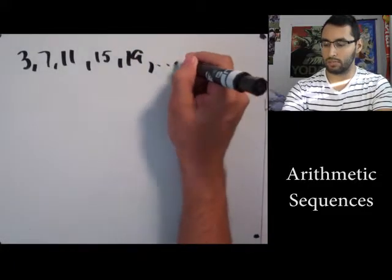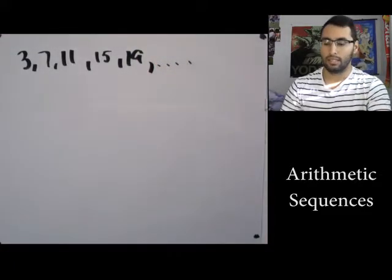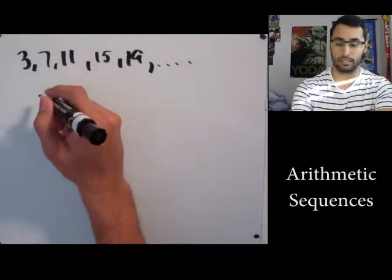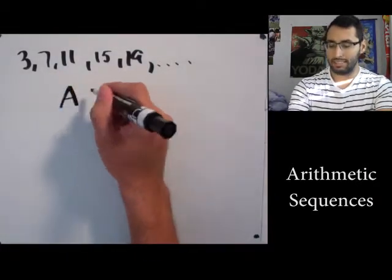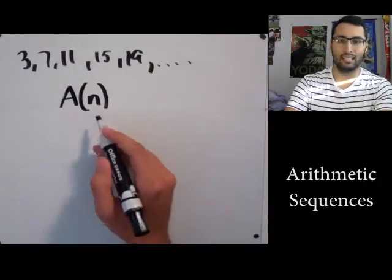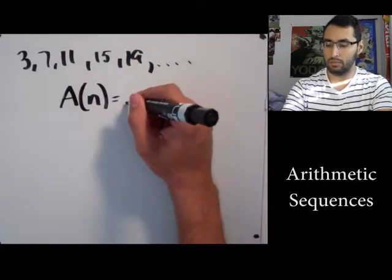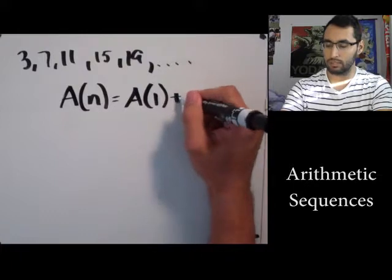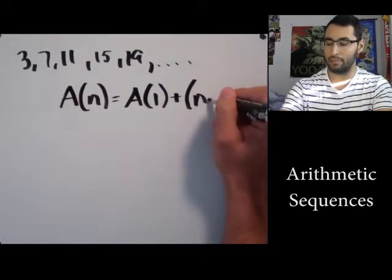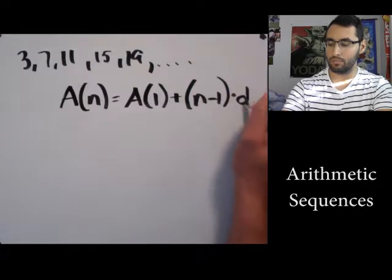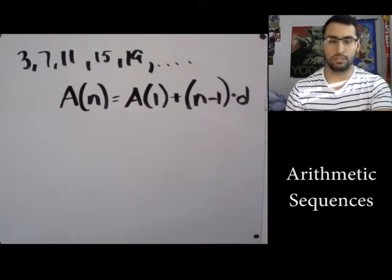This goes on forever and ever. To help you, I'm going to give you the formula to start off with. It's A(n) - don't think of this as A times n - equals A(1) plus, in parentheses, (n minus 1), and then times d.